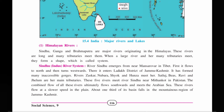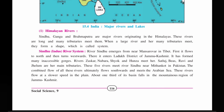The Sindhu river system: the river Sindhu emerged near Mansarovar in Tibet. It first flows to the north, then flows to the west, entering the Ladakh district of Jammu and Kashmir, where it forms many gorges. Rivers like Zaskar, Nubra, Shayok, and Khurza meet it here. Sutlej, Beas, Ravi, and Jhelum are the main tributaries of Sindhu. These five rivers meet near Mithankot in Pakistan. The combined flow of all five rivers ultimately moves southward and empties into the Arabian Sea.